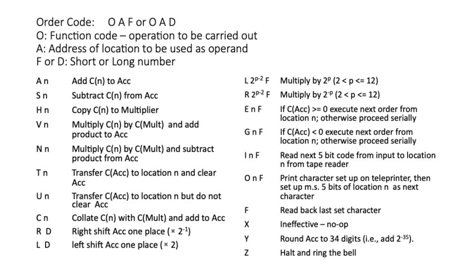An order was written as a letter for the function to be carried out, an address specifying the location in the store to be used as an operand, and then either an F or a D to indicate whether a short or a long number should be used. The instruction letters were quite mnemonic in several cases. The A instruction added the contents of location N to the accumulator — followed by F for a short number, or D for a long number. S subtracted the contents of the memory location from the accumulator.